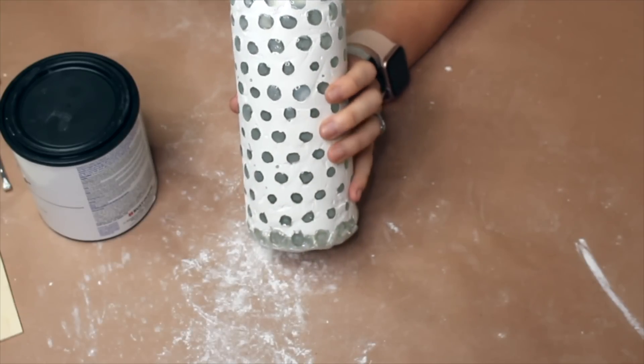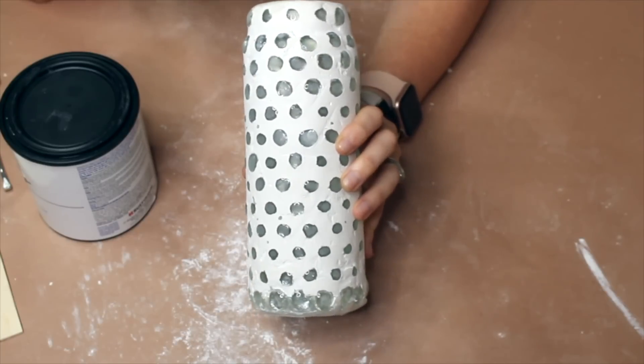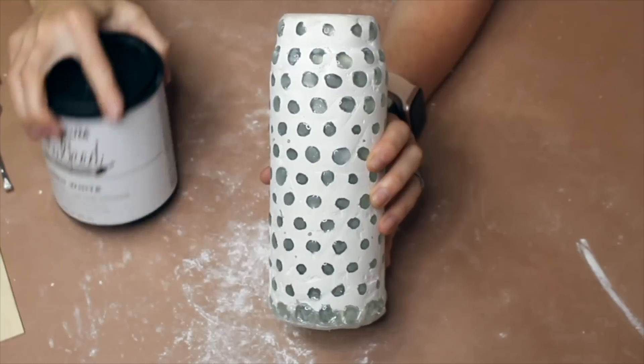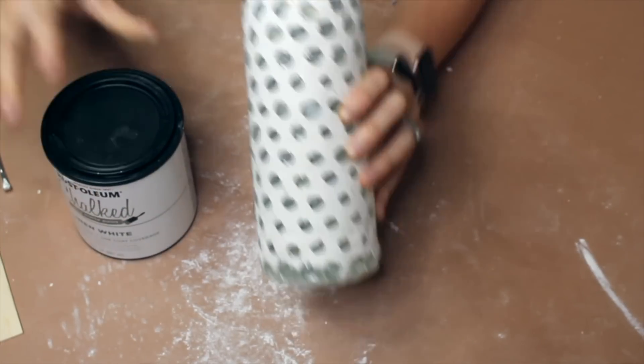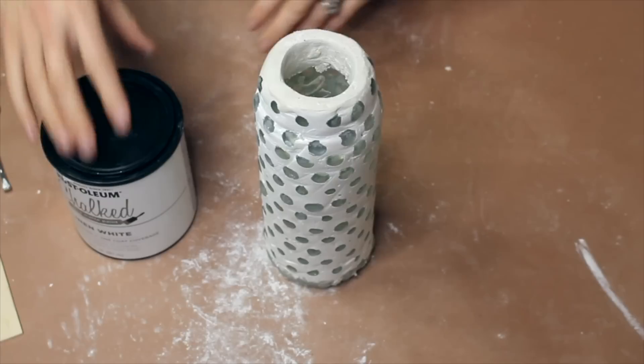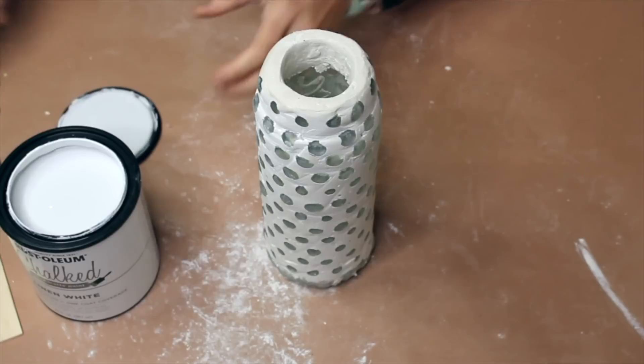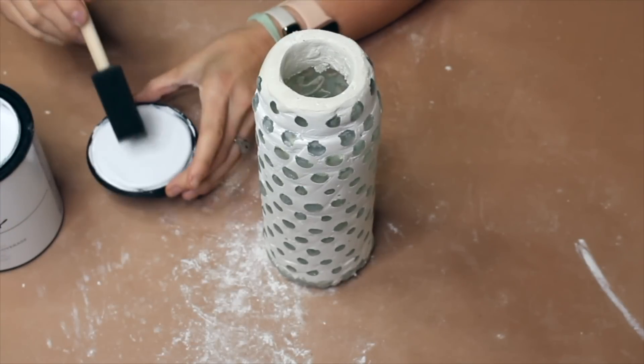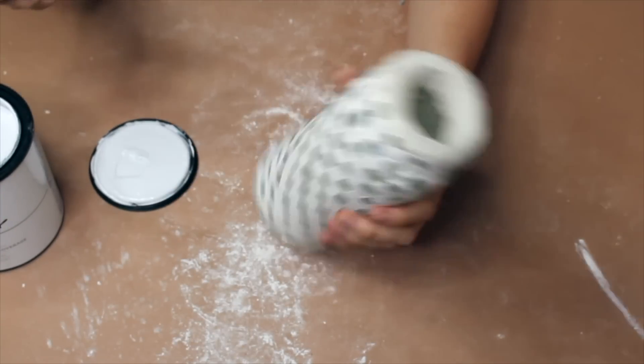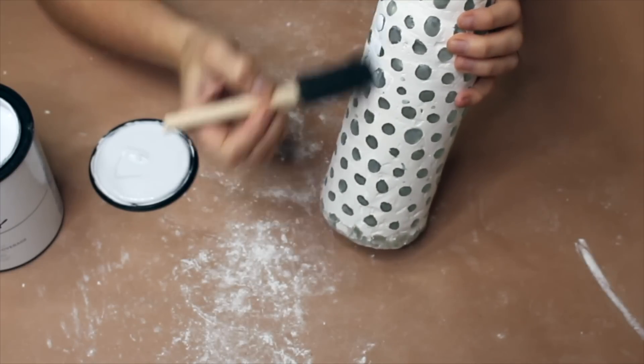Alright, so now I'm at a place where I feel really happy with the texture I'm seeing, and I'm ready to move on to the next step, which is painting. This is probably one of my favorite chalk paints. I do want this to have a matte finish to it, so we are going to be using some chalk paint. You can always use spray paint as well, that is an option.